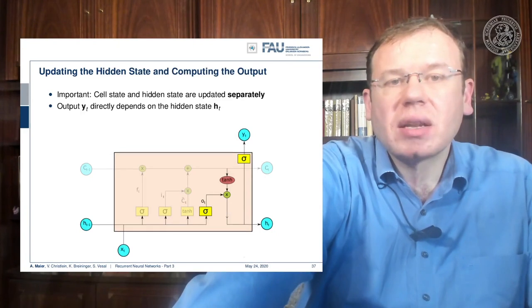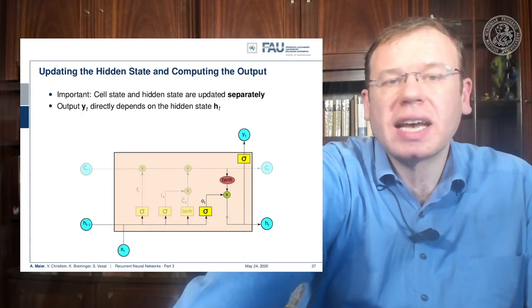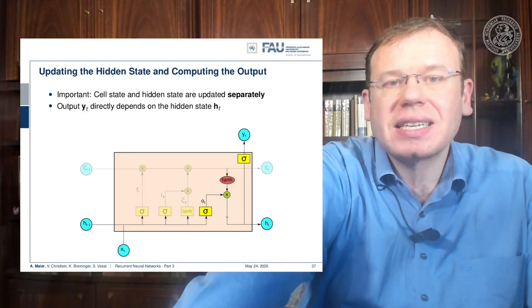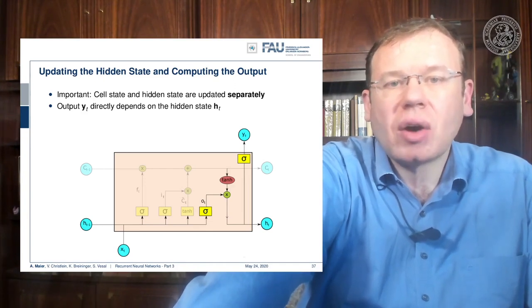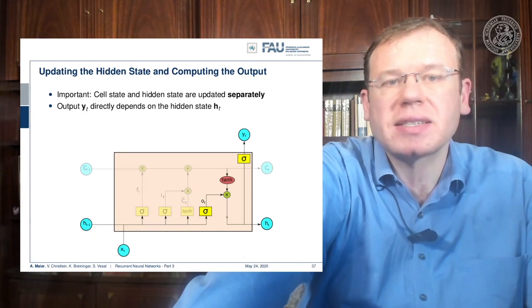Now we still have to produce the hidden state and the output. As we've seen in the Elman cell, the output of our network only depends on the hidden state.